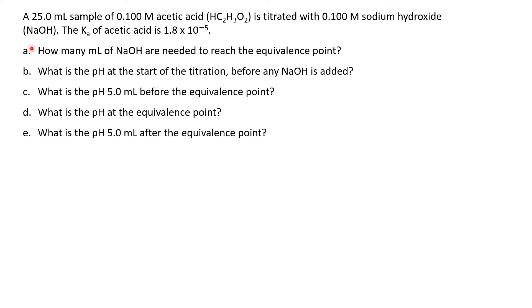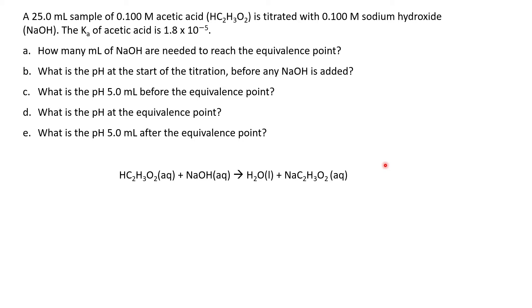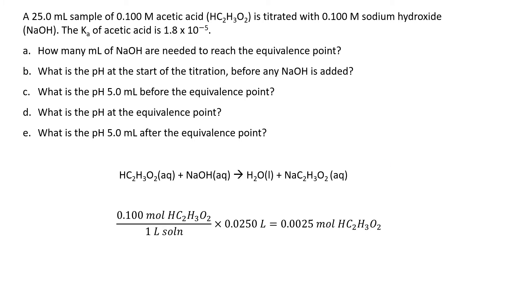Let's start with part A. To know how many milliliters of sodium hydroxide we need to reach the equivalence point, I'm going to start with my balanced chemical equation. This chemical equation has a one-to-one ratio, which will make our calculations a lot simpler. I'm starting with a sample of acetic acid — taking my concentration multiplied by the volume, so my liters cancel, and I have 0.0025 moles of acetic acid.